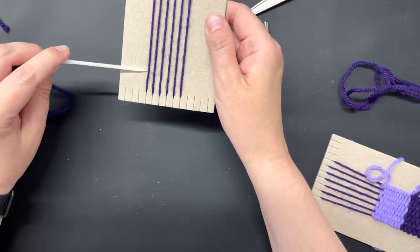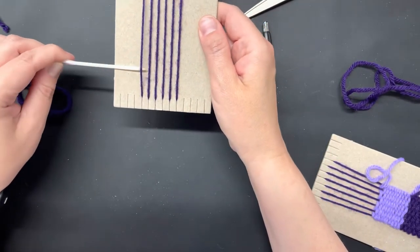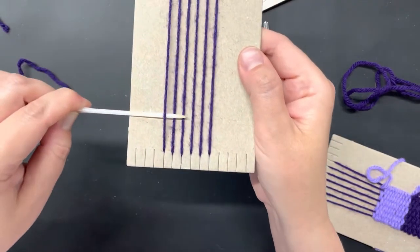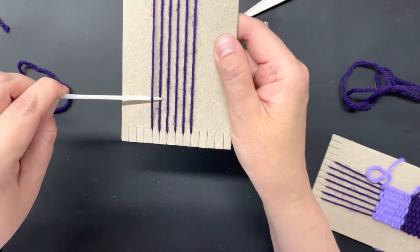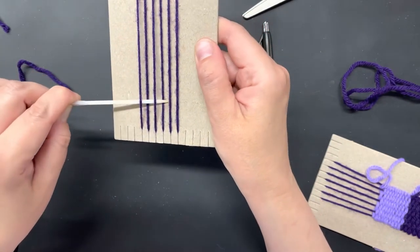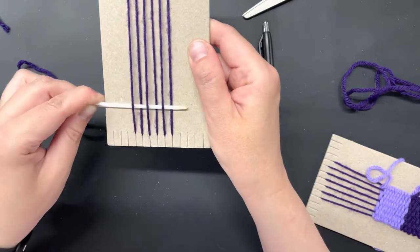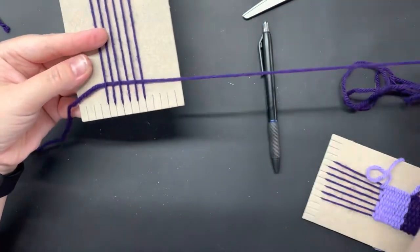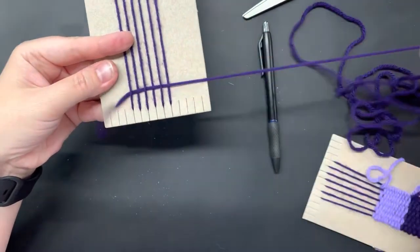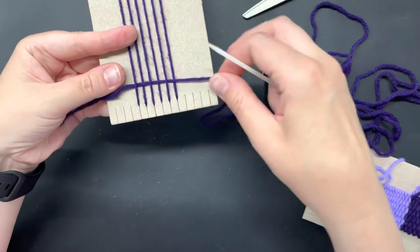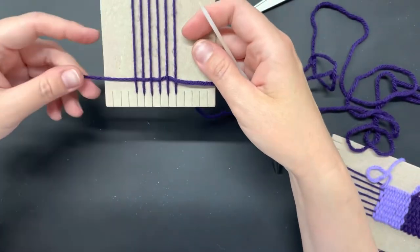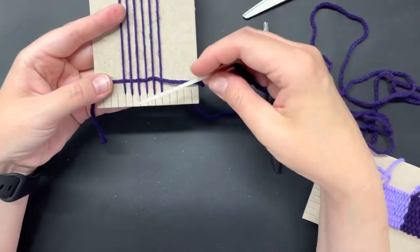So we're doing a very basic weave technique. You can look online and find others, but essentially we're just doing an over-under, over-under approach. So I'm going under my first string, over the second, under my third, over my fourth, under my fifth, over my sixth, and then pulling my needle through, and then pulling my thread, and again leaving a tail out the side.